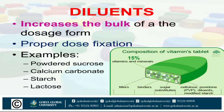The next excipient is diluents, which increase the bulk of a dosage form and help in proper dose fixation. When the quantity of the dose is very small and it is not practicable to compress such a small amount in the form of a tablet, inert substances are added to increase the bulk of the powder so it can be easily compressed — these are known as diluents.